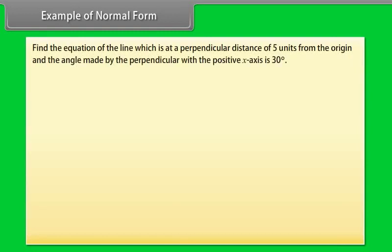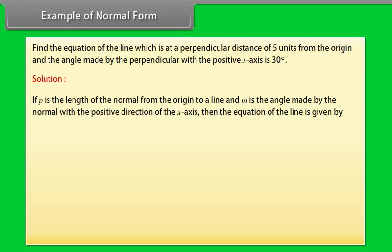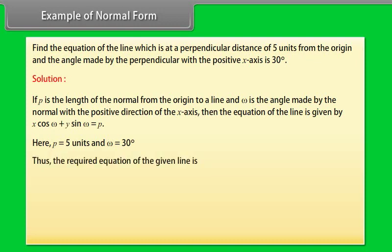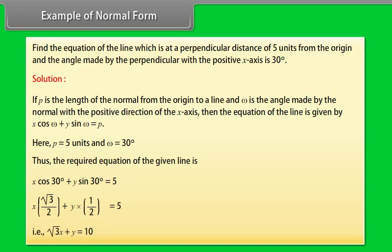Example: Find the equation of the line which is at a perpendicular distance of 5 units from the origin and the angle made by the perpendicular with the positive x-axis is 30 degrees. Solution: If p is the length of the normal and ω is the angle made with the positive x-axis, then the equation is x cos ω + y sin ω = p. Here p = 5 and ω = 30°. Thus the required equation is x cos 30° + y sin 30° = 5, which simplifies to x√3 + y = 10.